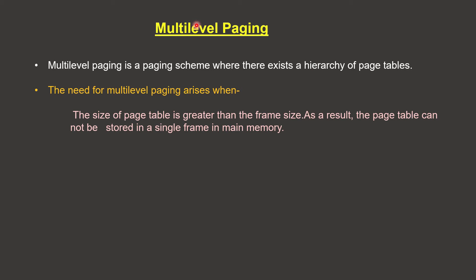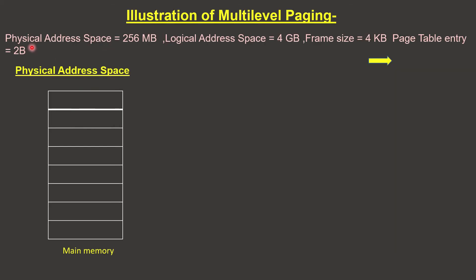We are going to do multi-level paging with an example. Physical address space is 256 MB. Logical address space is 4 GB. Frame size is 4 KB. Page table entry size n is equal to 2 bytes.